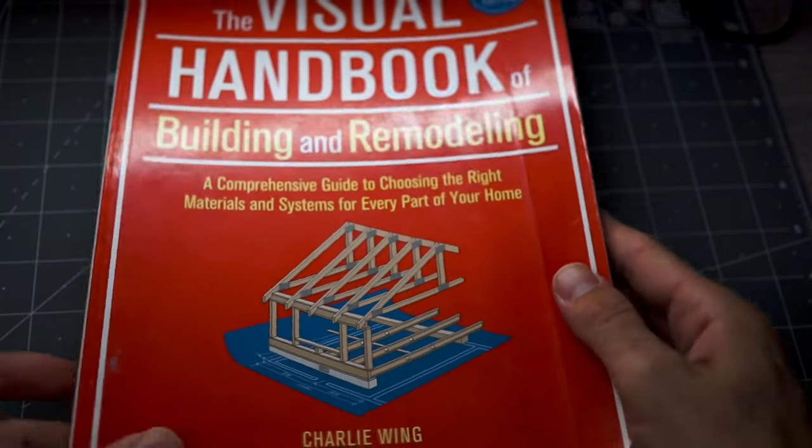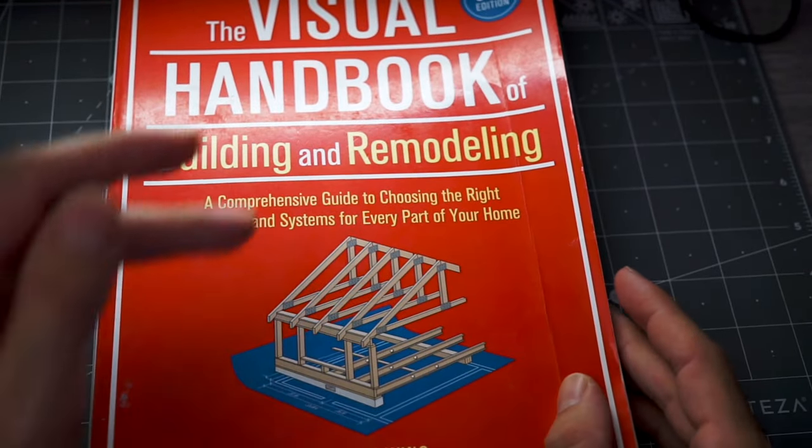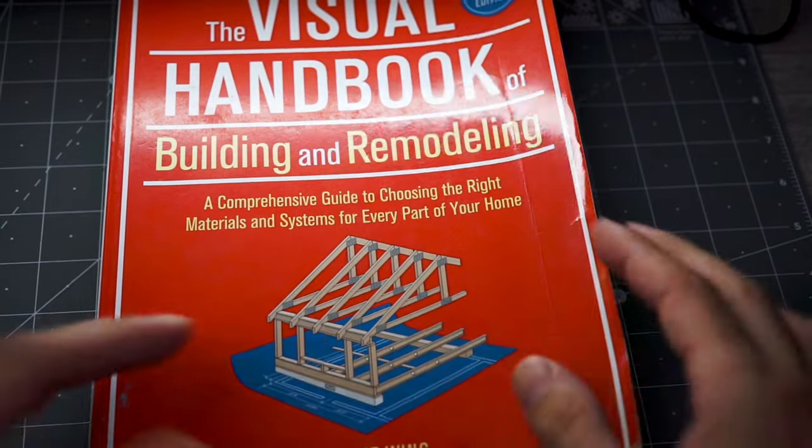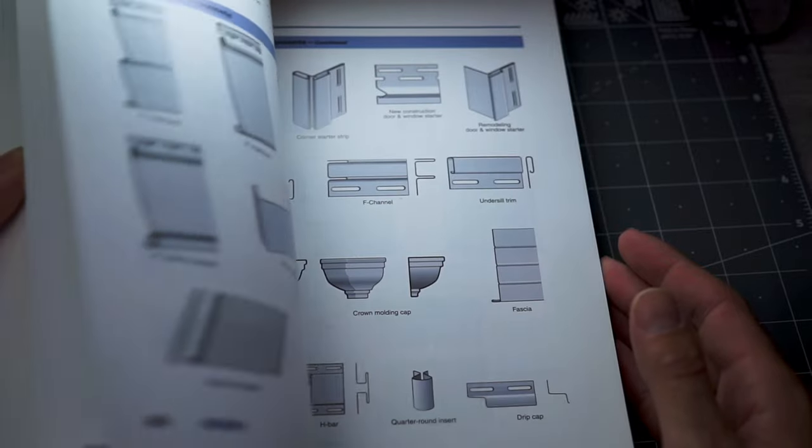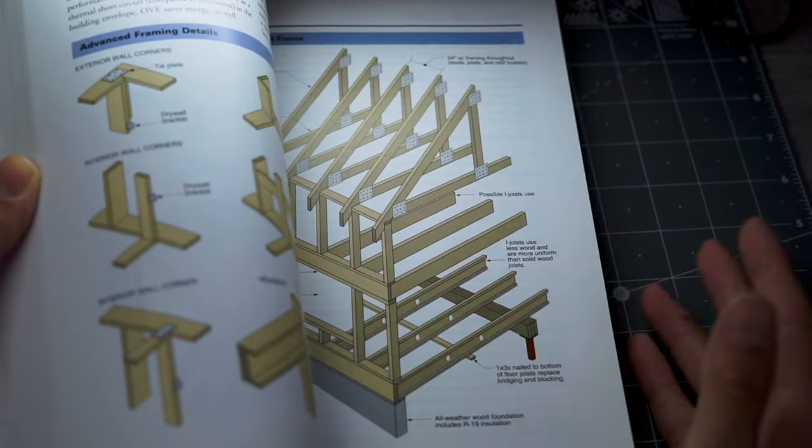This is the Visual Handbook of Building and Remodeling, third edition. I've actually owned a previous version of this book and loved it so much that I decided to buy the updated version. I'm a carpenter.